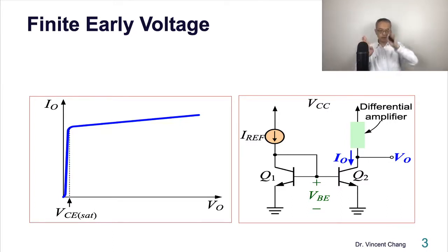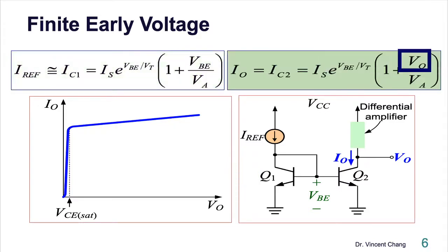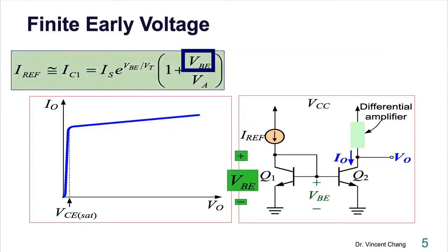When VCE is increased, then IC gradually goes up. The boundary between saturation and the forward active region is what we call VCE saturation. Now, if we put down the relationship between IC and VBE and VCE, it's going to be like this. On the left-hand side, you see the expression for IC1. IC1 is close to I reference. Let's neglect the base current error which we already considered before. It equals the first term exponential times the second one plus a linear term with respect to VCE.